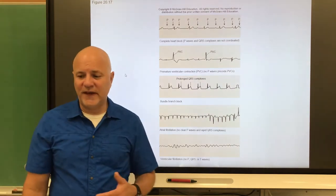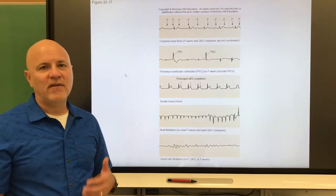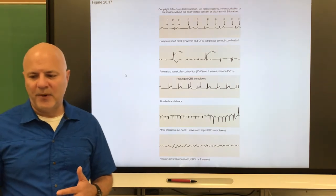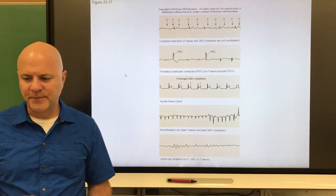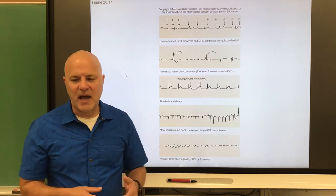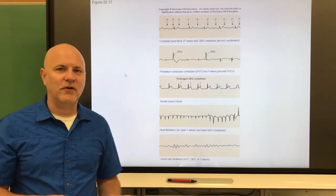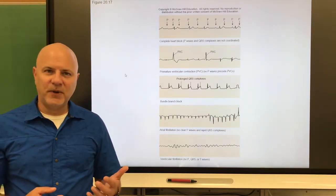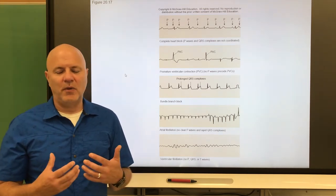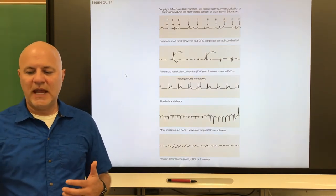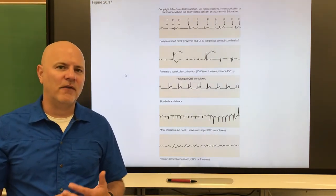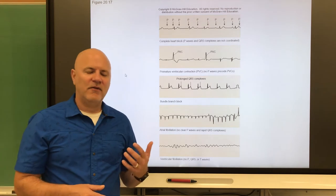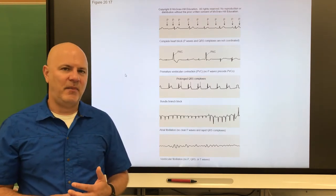Another thing you can have is a defective SA node. If you have a defective SA node, one is an ectopic focus. Ectopic just means it's in the wrong place. This is when an abnormal pacemaker takes over the pacing of the heart, and typically that's the AV node. This is what we call a junctional rhythm. The AV node becomes a pacemaker, but your heart rate is typically going to go down to 40 to 60 beats a minute, and for a lot of people, that's not going to meet their metabolic needs.